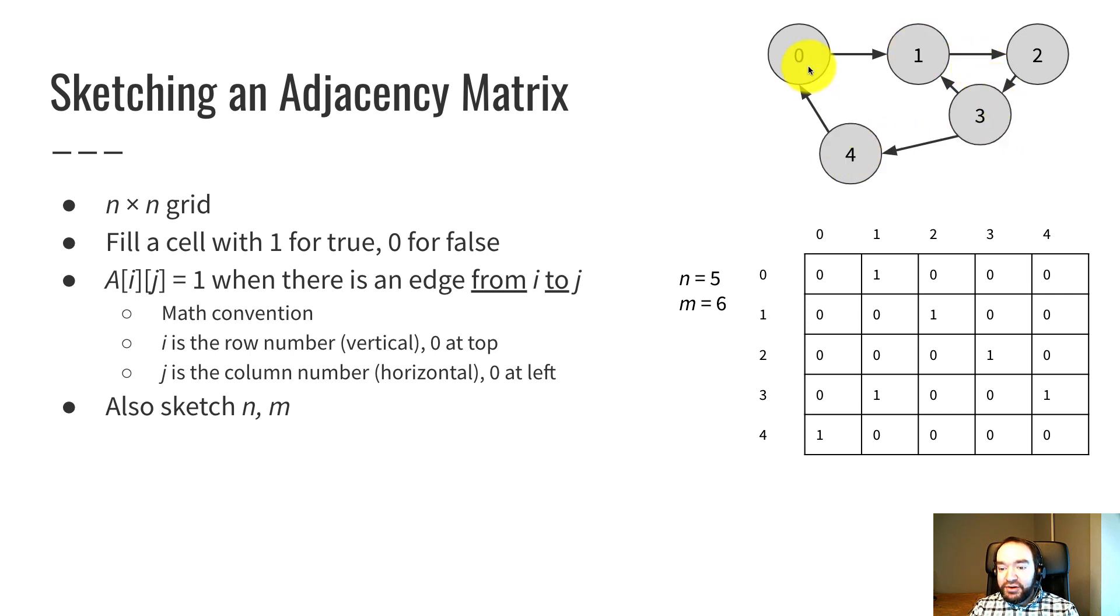Or, for example, the edge from four to zero. If I go to row four, column zero, we see a one. This one entry here represents true. That's because a[i][j], or a[4][0] is true to record the fact that there's an edge from four to zero.